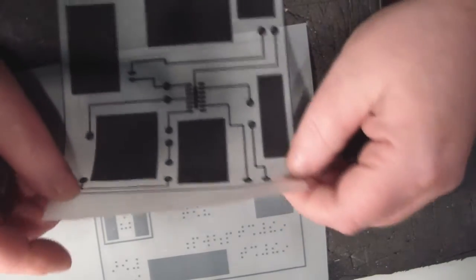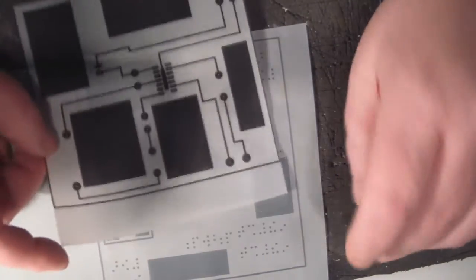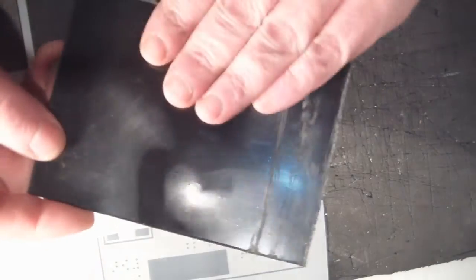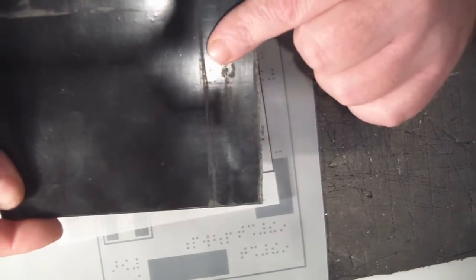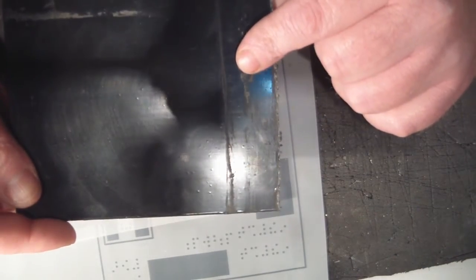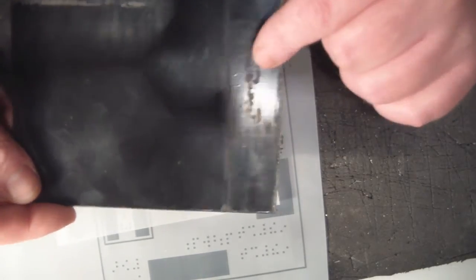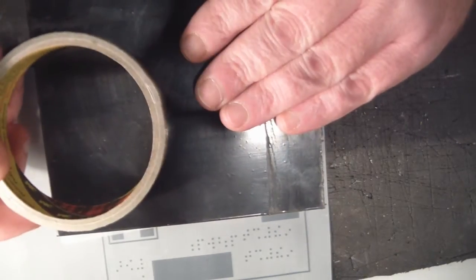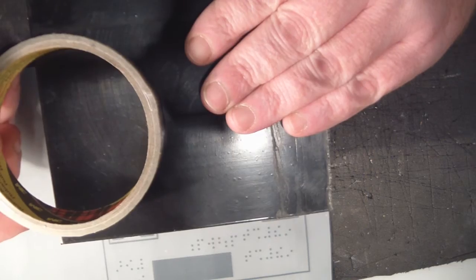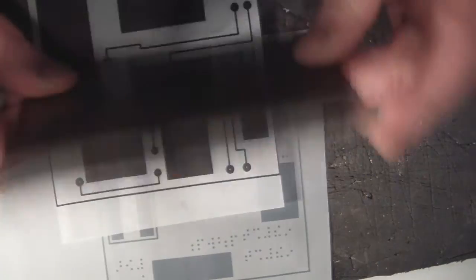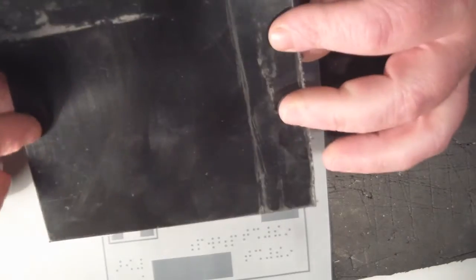One other thing I'm going to do to make this board is I'm going to do one side at a time. I'm going to expose this side, transfer the image on here, then etch that side off. Then I'm going to protect that side when it's etched off with some just normal sticky tape, and then expose this side and etch this side off.